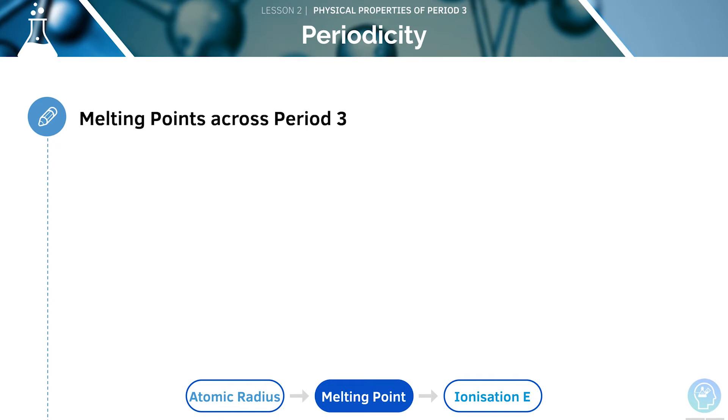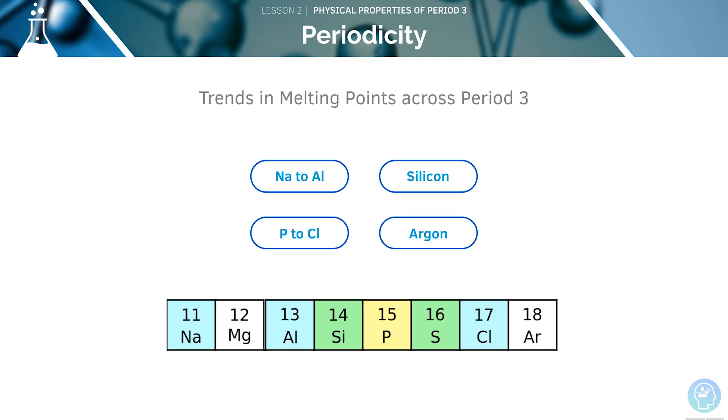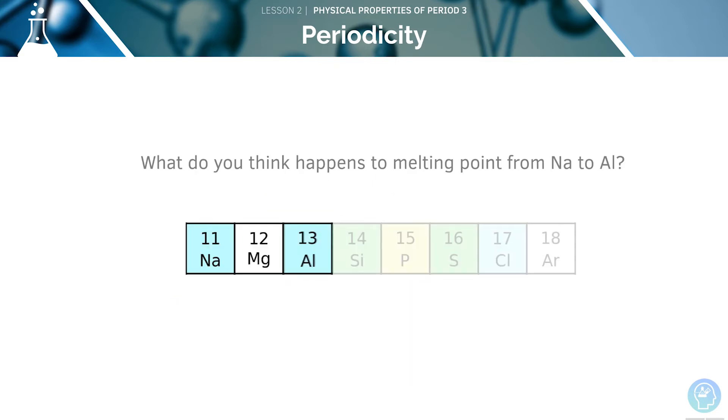Now let's look at the melting point across period 3. The melting point of the elements across a period will change according to their structure and bonding. Both of these have an effect on the melting point of an element, as we learnt earlier on. We will now discuss the trend in melting points across period 3. We're going to consider them in four separate groups, like this. What do you think happens when we go from sodium to aluminium? The melting point will increase from sodium to aluminium.